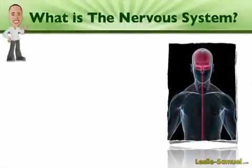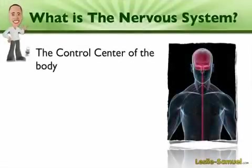The nervous system is basically the control center of the body. For all the processes that we saw on the previous slide to happen, they have to be controlled, as I mentioned before.